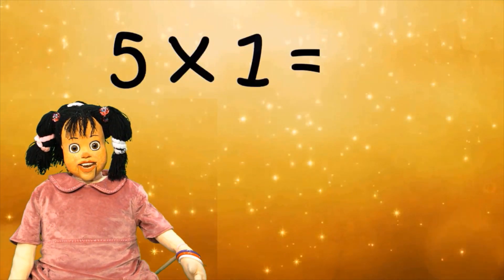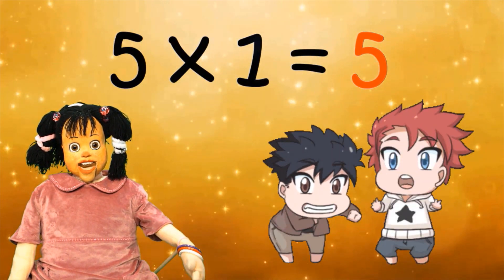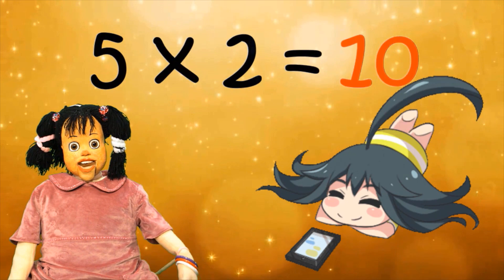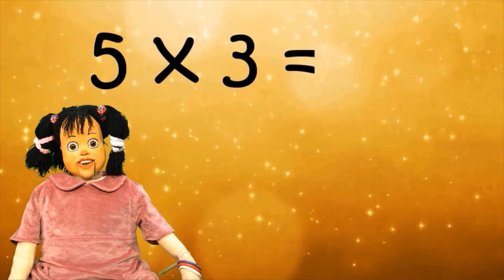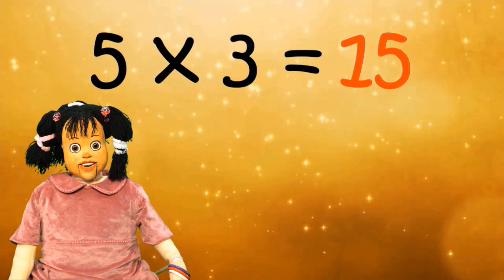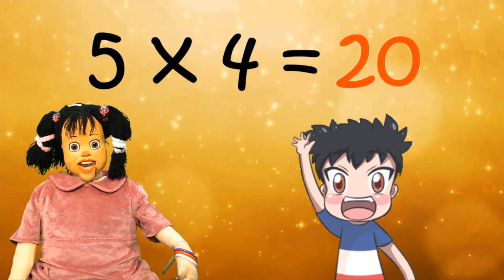5 times 1 equals 5, seç kendine. 5 times 2 equals 10, bu oyun bitti son. 5 times 3 equals 15, bu kalemler beleş. 5 times 4 equals 20, can geldi mi şimdi?